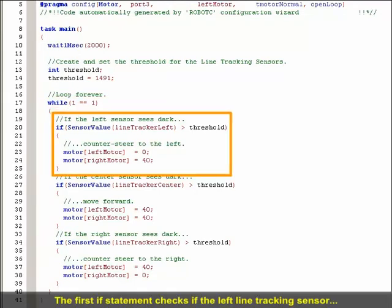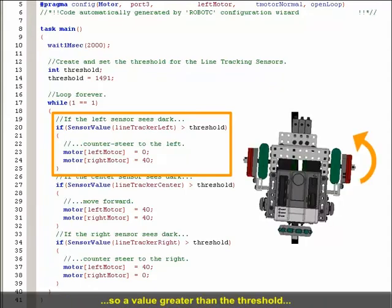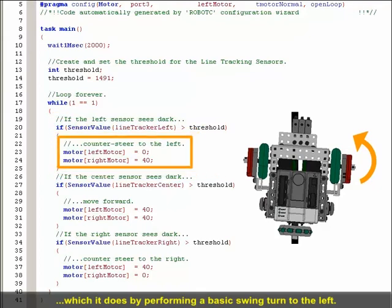The first if statement checks if the left line tracking sensor detects a value greater than the threshold. Dark surfaces return high values to the line tracking sensor, so a value greater than the threshold means that the left sensor is seeing the line. If the left line tracking sensor is seeing the dark line, the robot needs to steer left, which it does by performing a basic swing turn to the left.